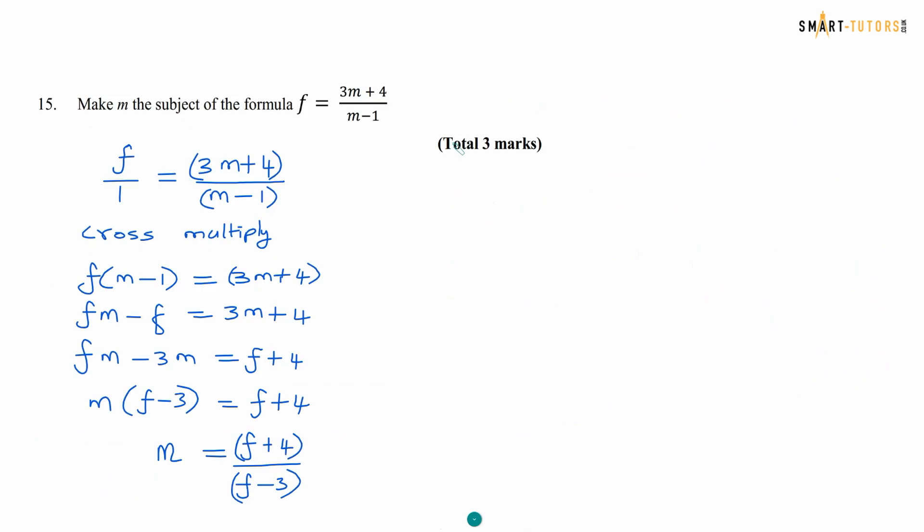Question number 15. Make m as a subject. Cross multiply and f times m is fm minus f and bring every m to one side. So fm minus 3m. Factorize the m. So f minus 3 equal f plus 4. Then f plus 4 divided by f minus 3 is the answer.